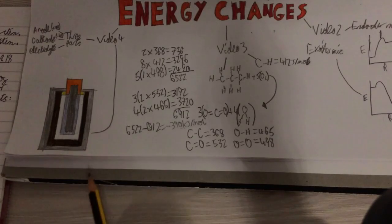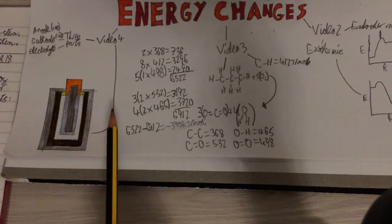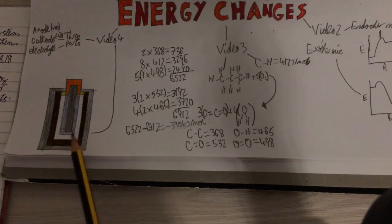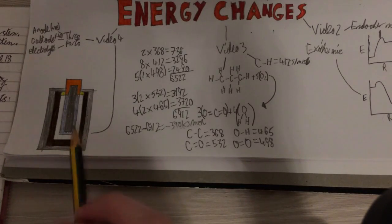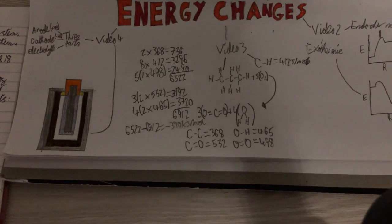Now this grey casing on the outside, that is zinc casing, and that is our cathode. That's the negative.